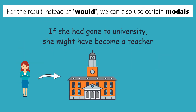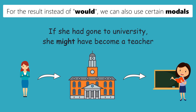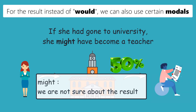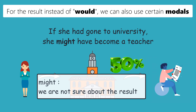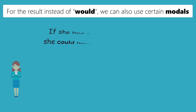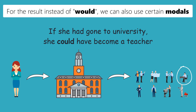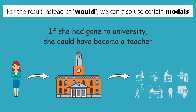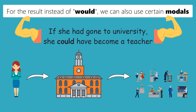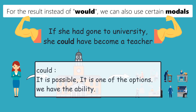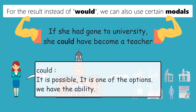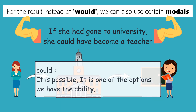If she had gone to university, she might have become a teacher. This means it is not certain that she would have become a teacher. Maybe she would have become a teacher, or maybe a translator — we are not sure about the result. And finally, if she had gone to university, she could have become a teacher, meaning she would have had the ability to become a teacher. Becoming a teacher would have been just an option for her — it would have been possible.